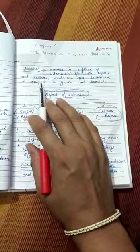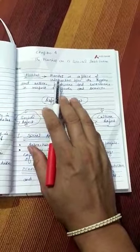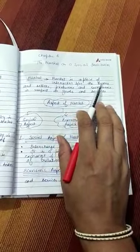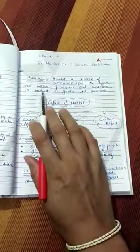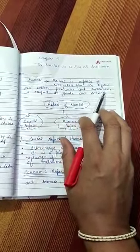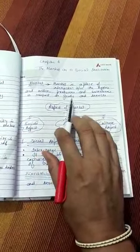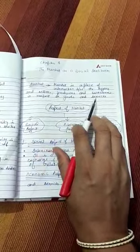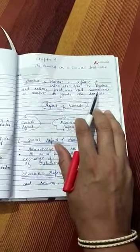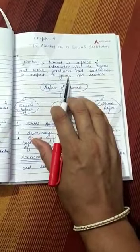Market is a place of interaction between buyers and sellers, producers and consumers, in respect to goods and services. Market ek aisa place hai jahan pe interaction hota hai buyers — yaani jo kharid raha hai — aur sellers — yaani jo bech raha hai — producers jo utpadan kar raha hai aur consumers jo bhogta hai. Us cheez ko ek doosre ke haath buy, sell, produce ya consume kar raha hai — us place ko hum market kehte hain.